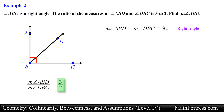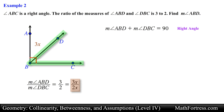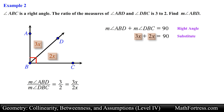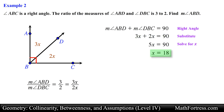We can write an equivalent ratio by multiplying the fraction 3 over 2 by x over x. This way we can replace the measure of angle ABD with 3x and the measure of angle DBC with 2x. We then substitute these algebraic expressions into the geometric relation, obtaining the following equation. Simplifying and solving for x, we obtain x equals 18. We then use this value to find the measure of angle ABD, obtaining 54 degrees. This is our final answer.